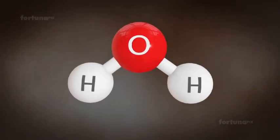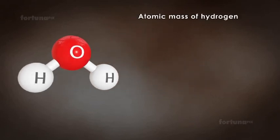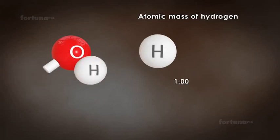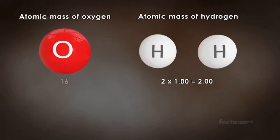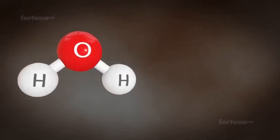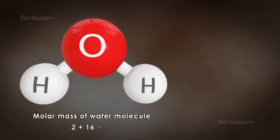Now let's look at something just slightly more complex: a water molecule. Water contains two hydrogen atoms and one oxygen atom. The atomic mass of hydrogen is 1.00, so the mass of two hydrogen atoms will be 2 × 1.00, which is 2.00. The atomic mass of oxygen is 16. Adding up the atomic masses of the three atoms will yield the molar mass of our water molecule: 2 plus 16 equals 18.